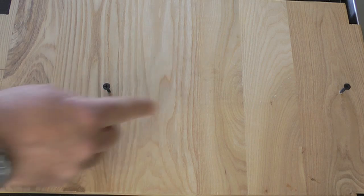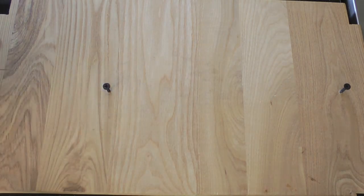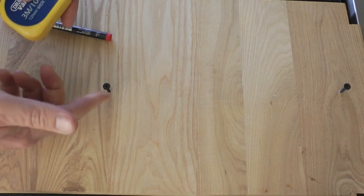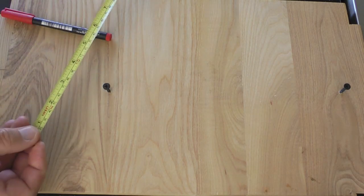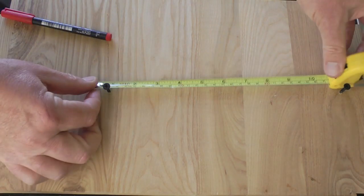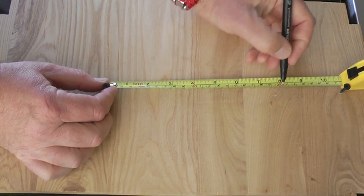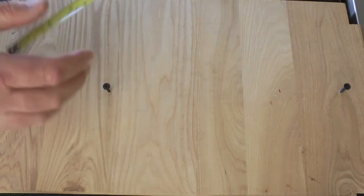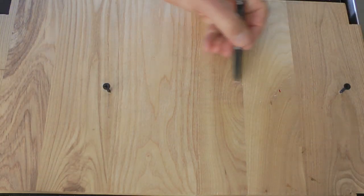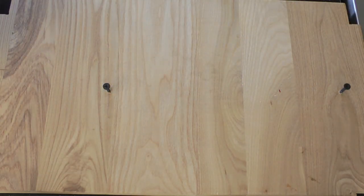So I've put my screws in the board about 300 millimeters apart. I know that my wrist is 8 inches. So from the bottom screw, I simply measure 200 millimeters, which is 8 inches, up the board. And that's going to be the size of my paracord bracelet that will fit my wrist.